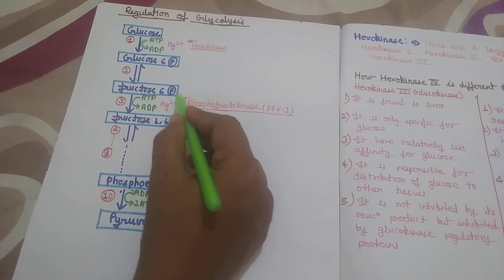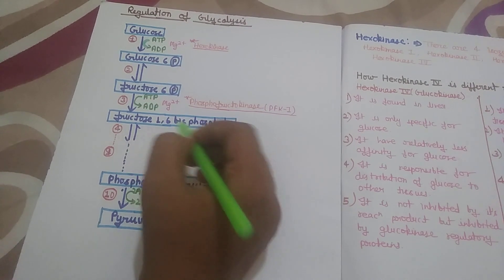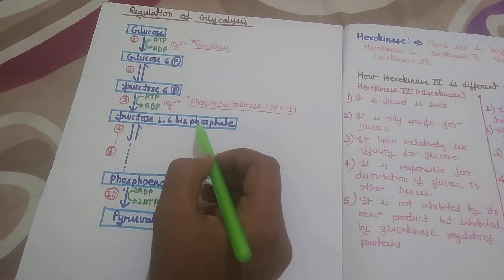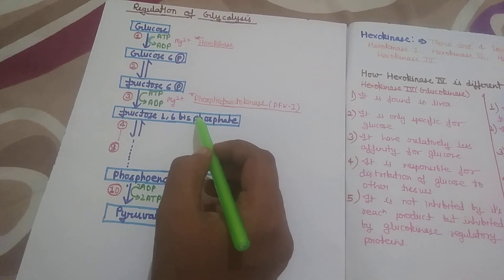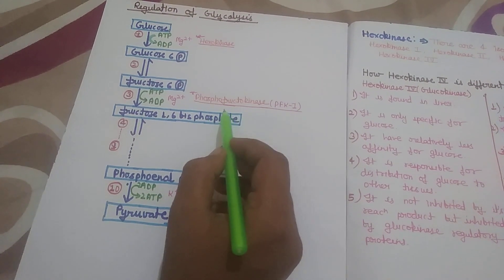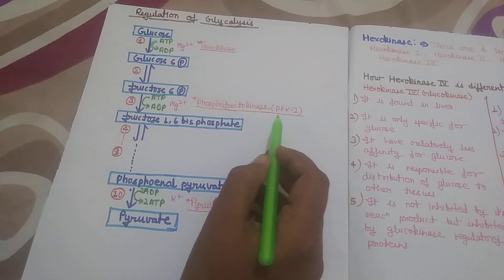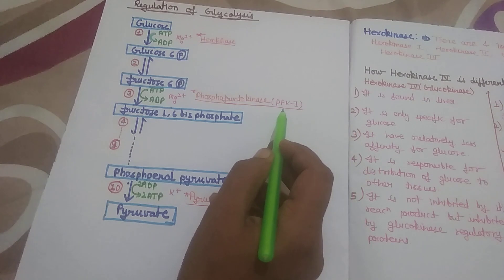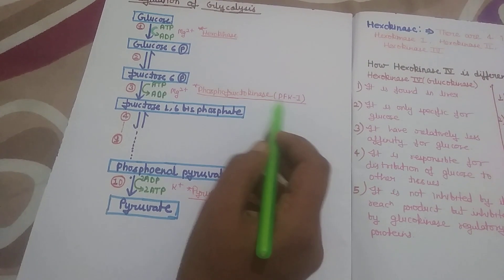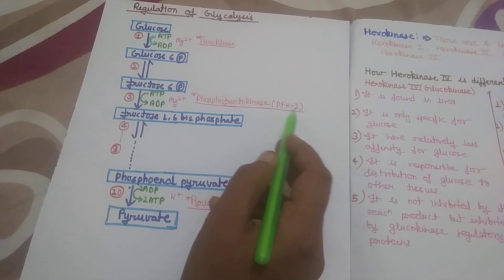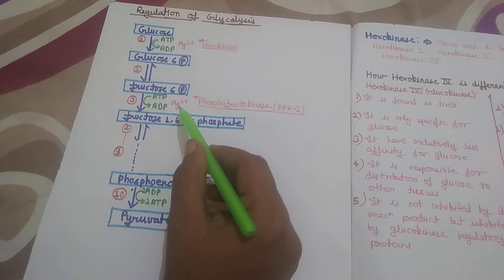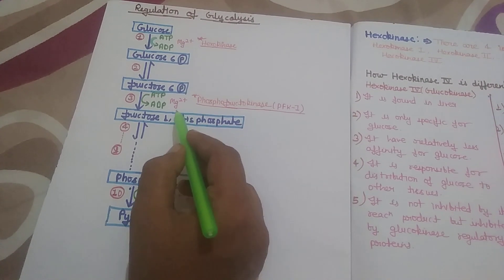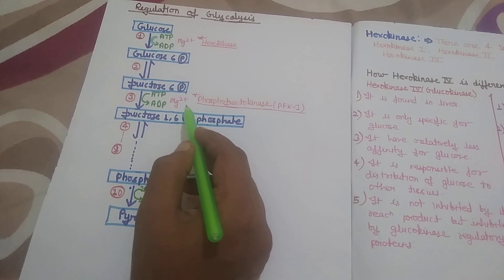In the second regulatory step, Fructose-6-phosphate is converted into Fructose-1,6-bisphosphate. This reaction is catalyzed by the enzyme Phosphofructokinase, that is PFK1. Don't be confused — there are two PFKs: PFK1 and PFK2 — and this reaction is catalyzed by PFK1. In this reaction, ATP is also converted into ADP and magnesium ion acts as a cofactor.